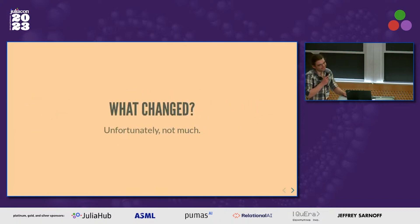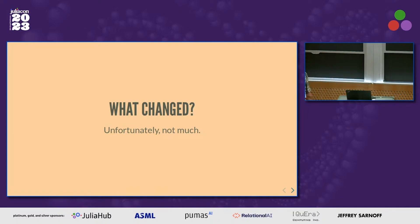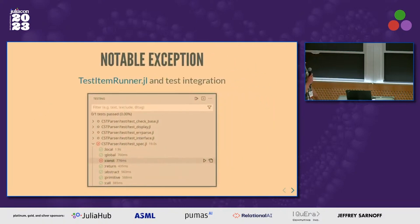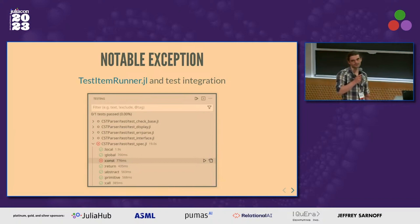Turns out, not much has changed. Neither David Antof nor myself had too much time to spend on increasing the feature set of the extension, although it has been kept maintained, and as such still works, even with recent Julia versions like 1.9. However, there is one notable exception: some development has been put into testItemRunner.jl and the test integration of the extension. So if you're among the folks who write tests for packages, that's good news.